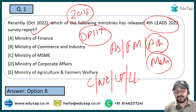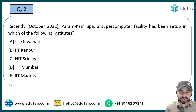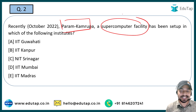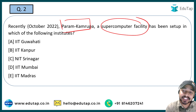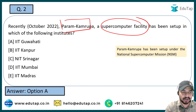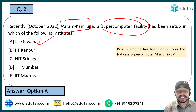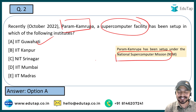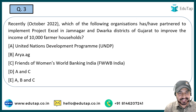The next question: Param Kamruph, which is a supercomputer facility, was recently set up in which of the following institutes? The right answer is Option A — IIT Guwahati, where the Param Kamruph supercomputer facility has been set up under the National Supercomputer Mission.